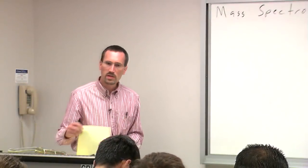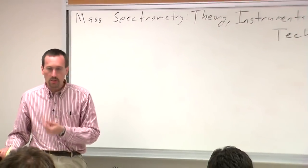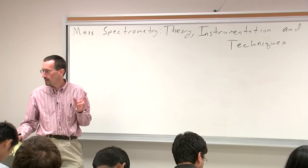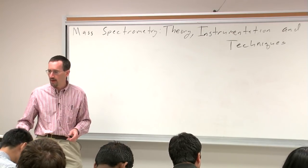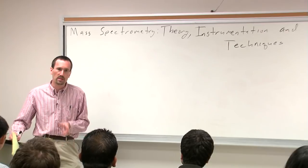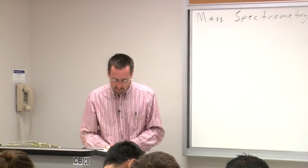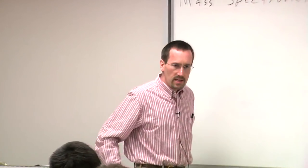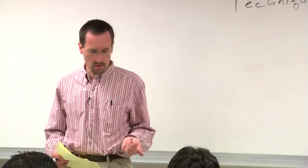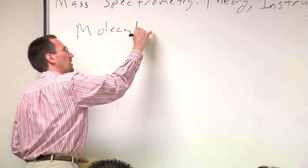We're starting to talk about mass spectrometry. Today we're going to talk about how the technique works. Next lecture on Monday we'll talk about concepts, and on Wednesday we'll spend one lecture on EI fragmentation, which is kind of special topics. Mass spec is a super important technique. Molecular weight and molecular formula are some of the most fundamental things you can get, and mass spec easily gives you molecular weight.